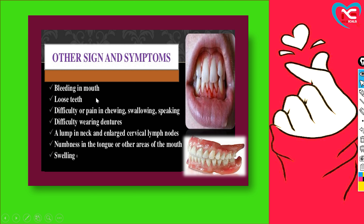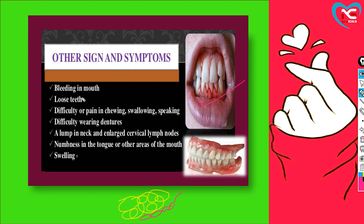Other symptoms include bleeding from the mouth when cancer increases significantly. This happens because cancer cells keep growing and begin to compress normal cells — the thin capillaries inside normal cells rupture and blood flows out, which becomes visible. Loose teeth — if cancer is behind the teeth or on the jaw, it disrupts the blood supply to the teeth, causing the surrounding tissue to be affected.